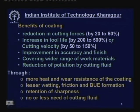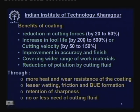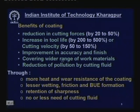Tool life increases drastically — from 200 to 500 percent — or we can increase the cutting velocity for productivity while keeping the tool life the same. Carbide tools normally used at 60 to 120 m/min can now be used at up to 150 to 180 m/min — a 50 to 150 percent increase. Improvement in accuracy and finish is achieved since the wear-resistant cutting edges remain sharp over a long time. Coating also covers a wider range of work materials.